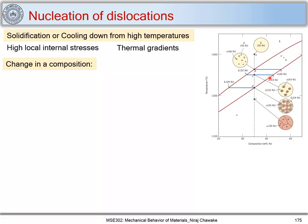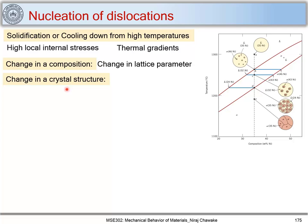At point C, the alpha has 43 percent nickel; at point D, alpha has 35 percent nickel; and at point E it is again alpha with 35 percent nickel. As the liquid solidifies, the alpha solid forming out of the liquid has a different percentage of nickel, and this change in composition causes a change in lattice parameter, which results in nucleation of dislocations.